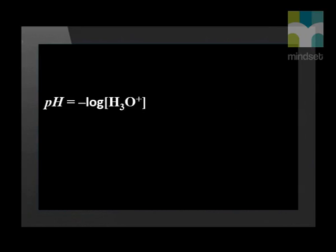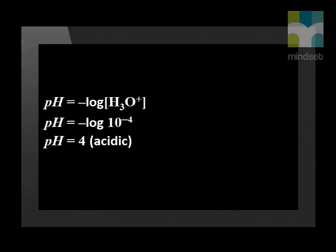The concentration of the hydronium ion is substituted into the pH formula and it is found that the pH is 4 and the solution is acidic.